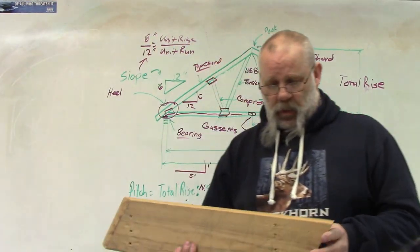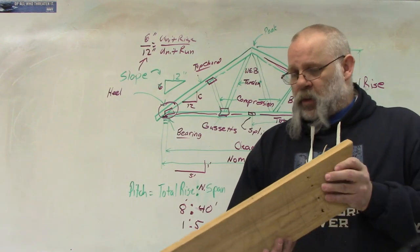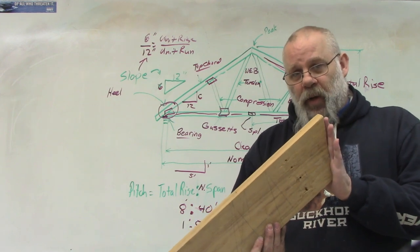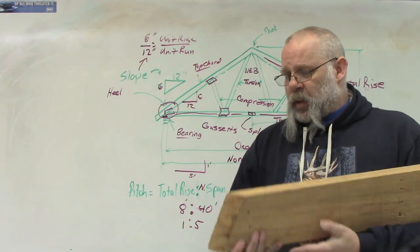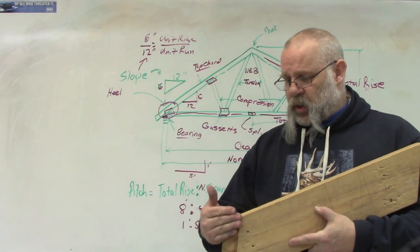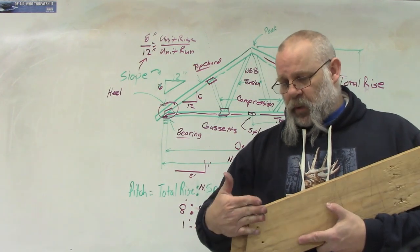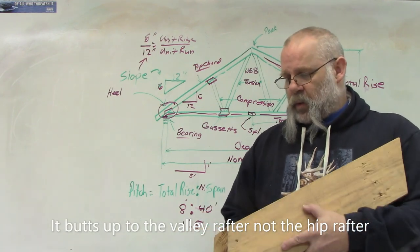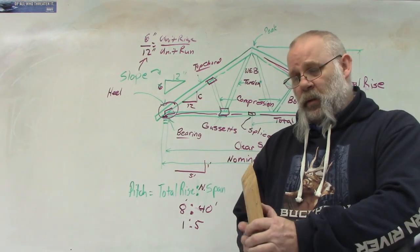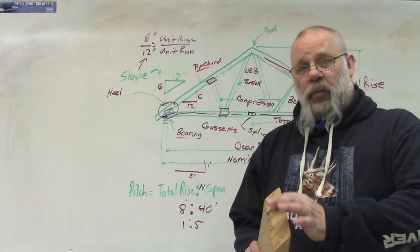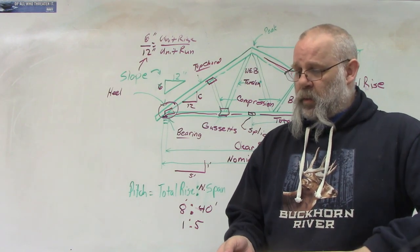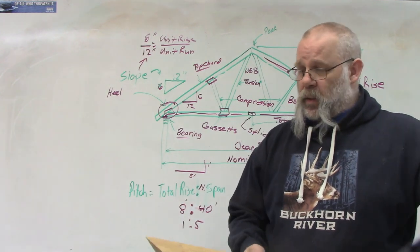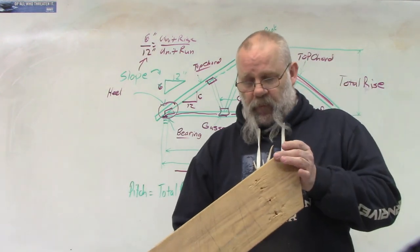The next one is a valley jack. A valley jack has a plumb cut at the top where it meets the ridge board, just like the common rafter does. And at the bottom it has a single cheek cut — a single beveled miter cut — because the hip rafter is going to come up through here and it has to nail up against it at an angle. So this would be a valley jack.